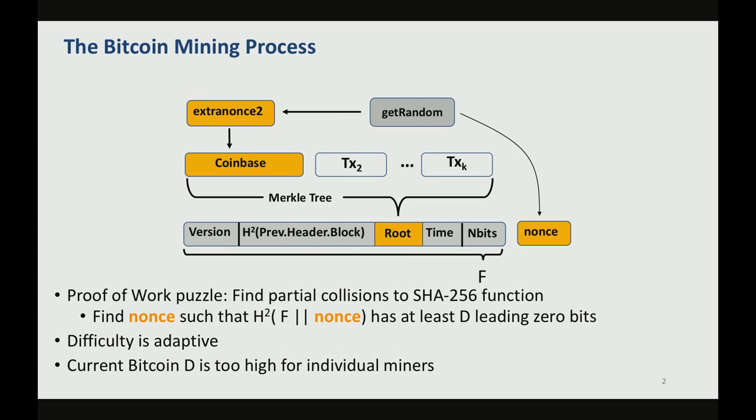What is really important, though, is that they're supposed to also figure out this nonce. They actually create two nonces. They're supposed to find these values such that when they apply a double SHA-256 function, we get at least d leading zero bits. As you can imagine, the more leading zero bits that we require, the harder it is to solve this puzzle. And this allows us to introduce the notion of a difficulty of the puzzle.